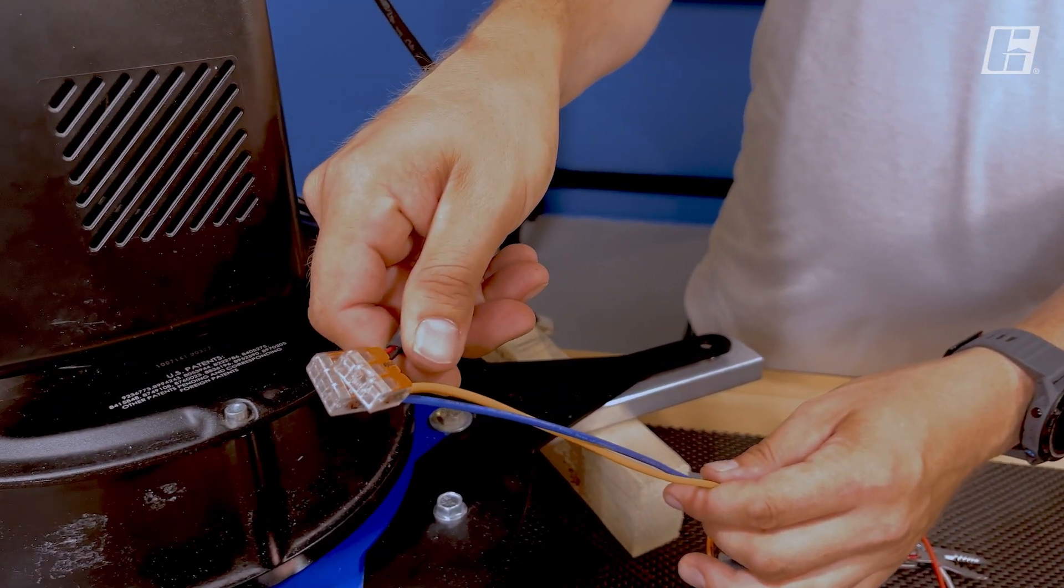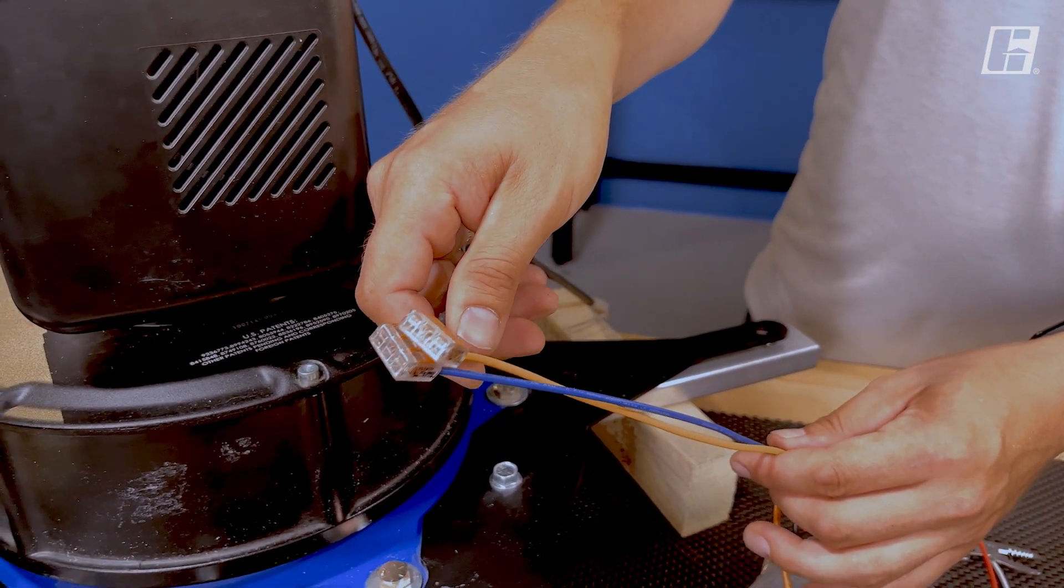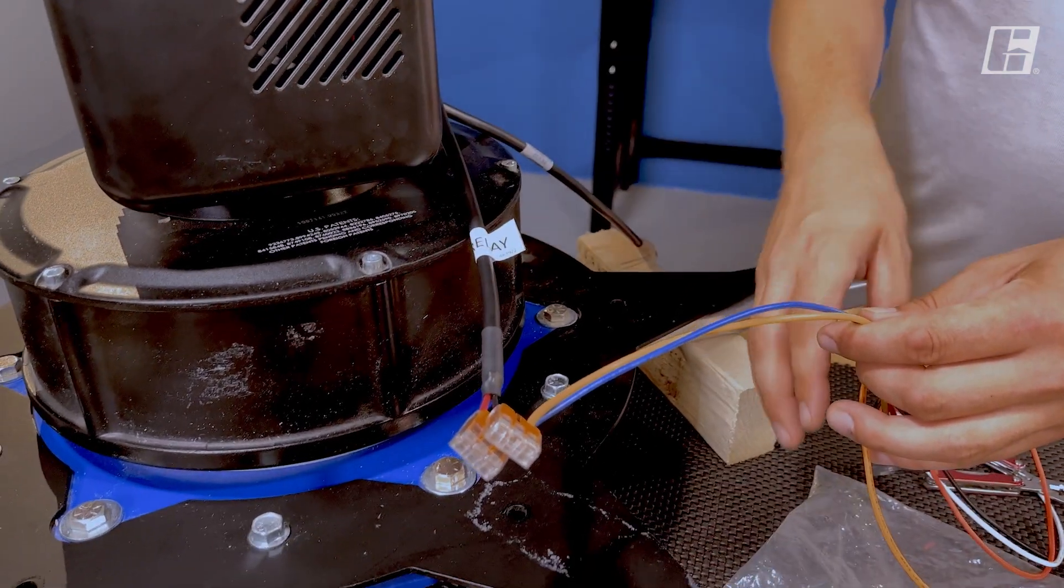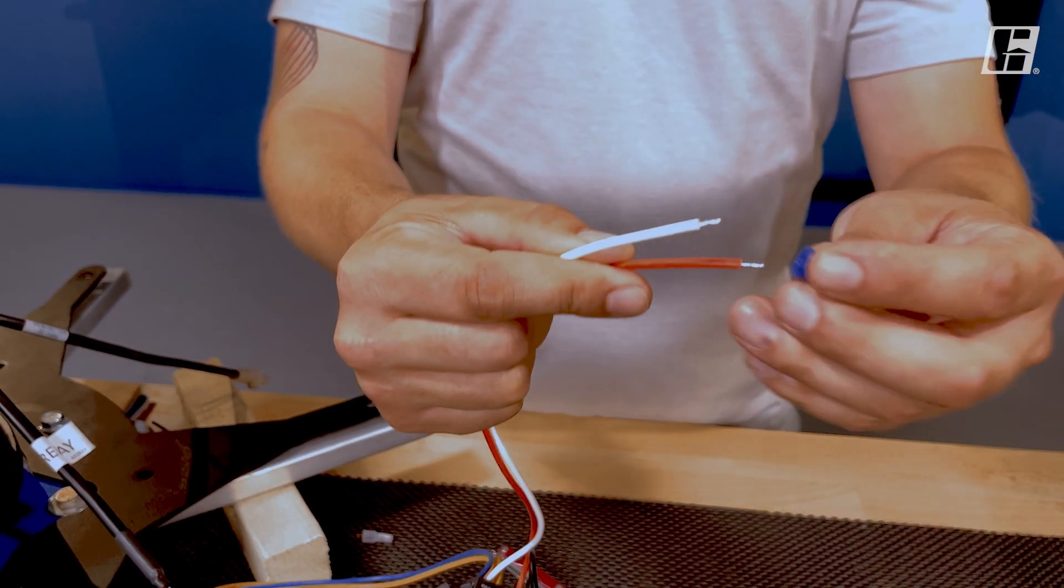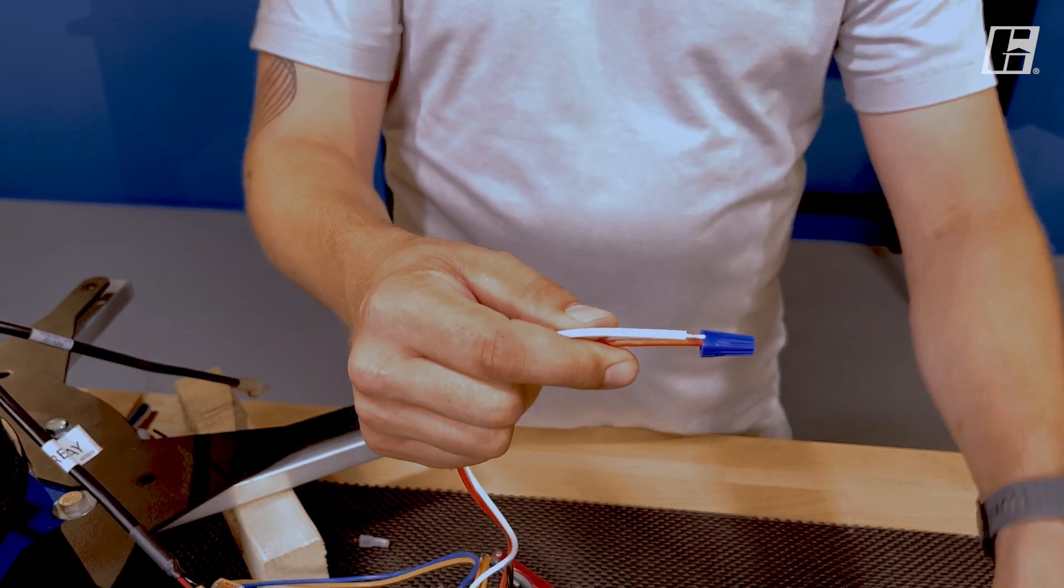There we go. Now we have a normally closed connection, which means the fan will run until it receives an interrupt signal. Here we have our contacts for 24-volt and common.